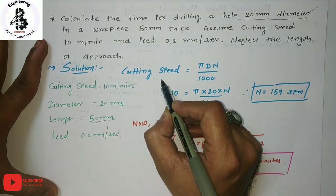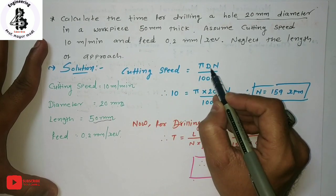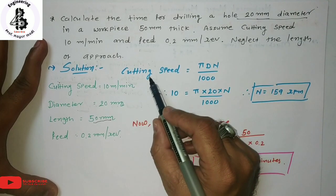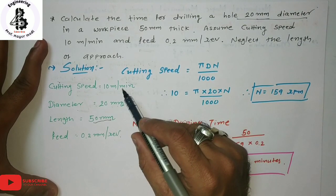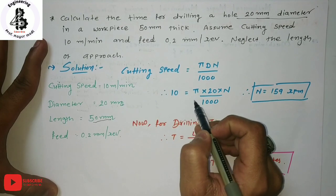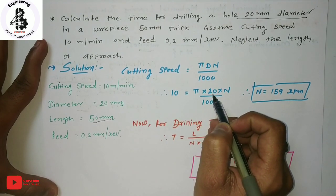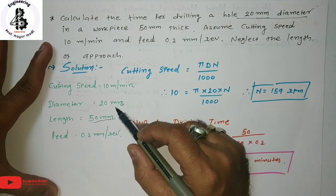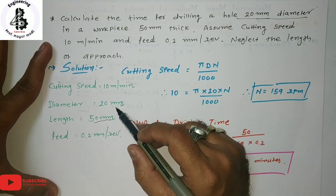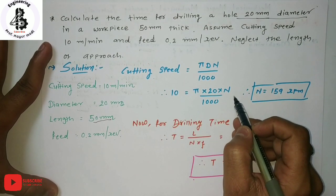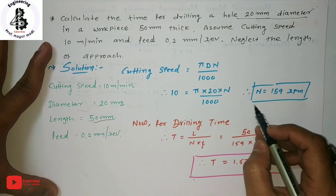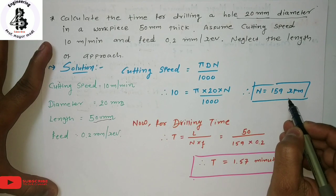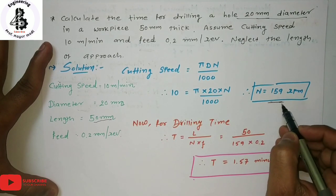From the standard relation, cutting speed equals π × D × N divided by 1000. Substituting the cutting speed as 10 meters per minute and D as 20 mm, we solve for capital N, which gives us the drill bit speed in revolutions per minute.